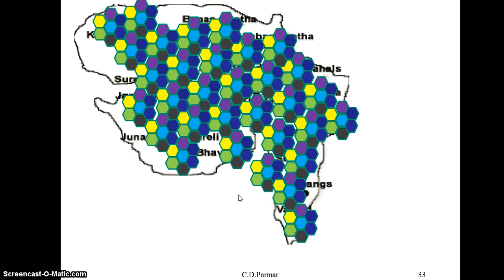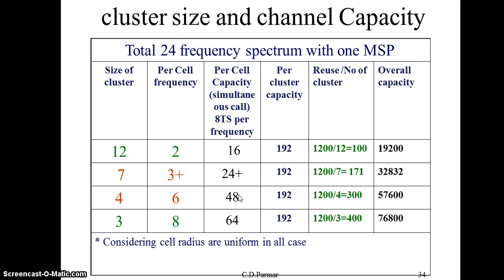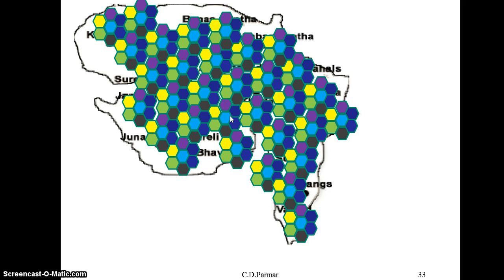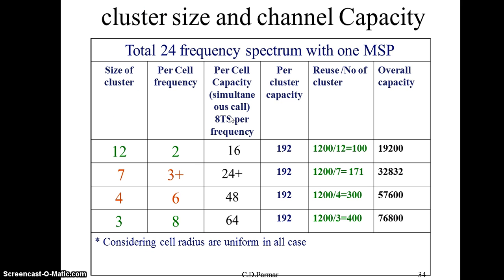With so many frequency reuses, we now try to see the overall impact of cluster size on an entire state. The previous table showed channel capacity per cell; now we look at the same scenario for an entire state. In this table, the first three columns are repeated — cluster size, per-cell frequencies, and per-cell capacity — but we now add per-cluster capacity, number of clusters in a state, and overall capacity, assuming around 1200 cells in a state using different cluster sizes.